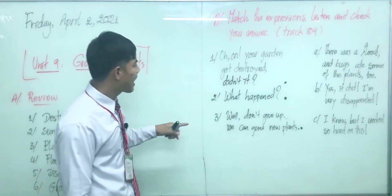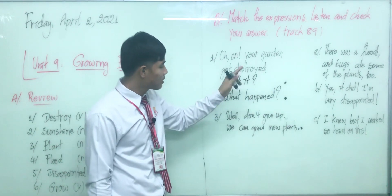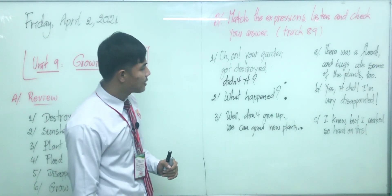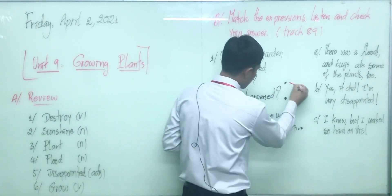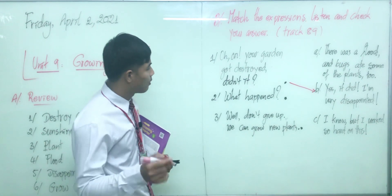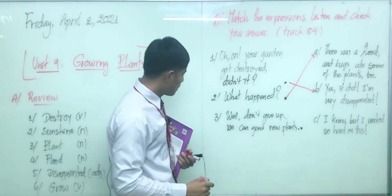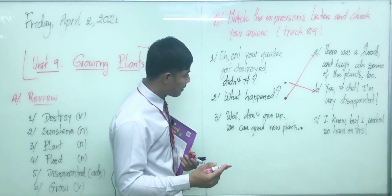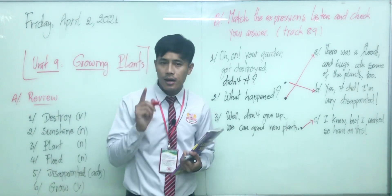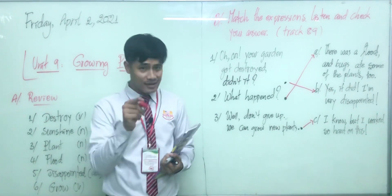Now let's match the answers. Number one — 'Oh no, your garden got destroyed, didn't it?' — matches with Letter B: 'Yes it did, and I'm very disappointed.' Number two — 'What happened?' — matches with Letter A: 'There was a flood.' Number three — 'Well, don't give up, you can grow new plants' — matches with Letter C: 'I know, but I worked so hard.' Now let's spend one minute to listen to the track and check that the answers are correct.